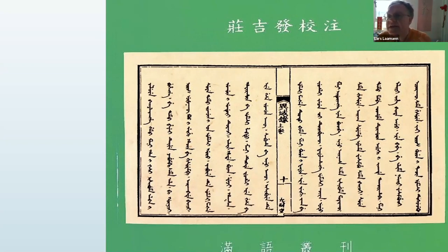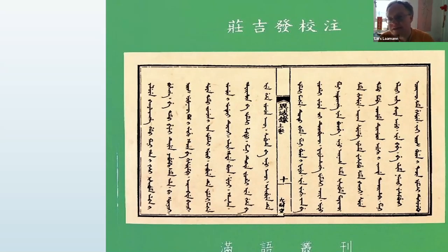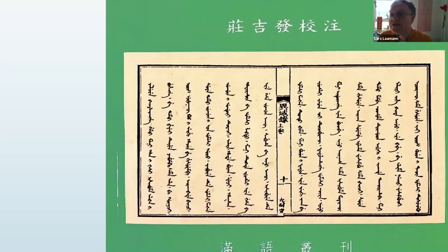The Uyghurs used this script for their own Turkic language. It's only much later, in the Islamification of Xinjiang and Turkestan, that Arabic script replaces this writing system. But one ethnic group that borrows from the Uyghurs at this early point are the Mongols.